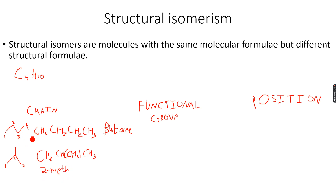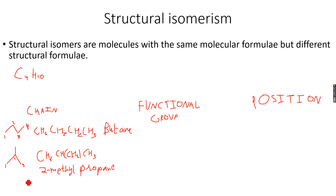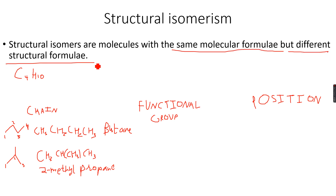These are called chain isomers because you've changed the type of chain — from a straight chain to a branched chain. The compound is called two-methylpropane because there is a methyl group on the second carbon atom, and three carbon atoms in the main chain. These two are isomers because they have the same molecular formula but different structural formulas.